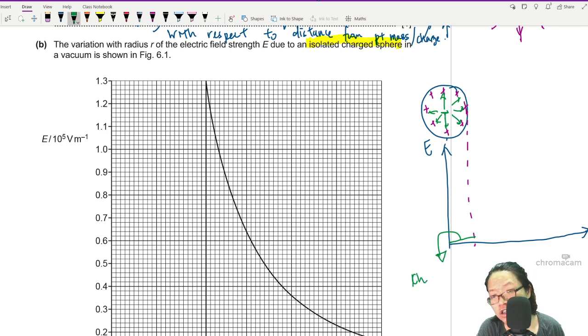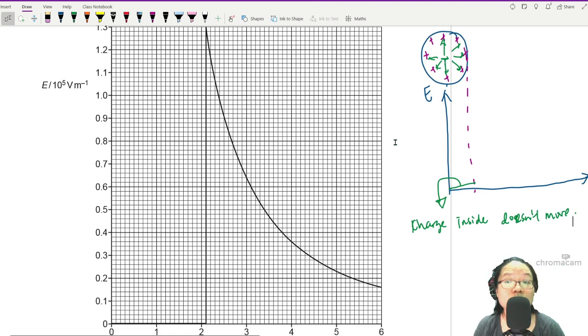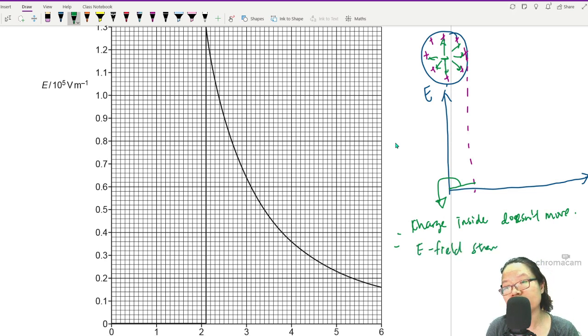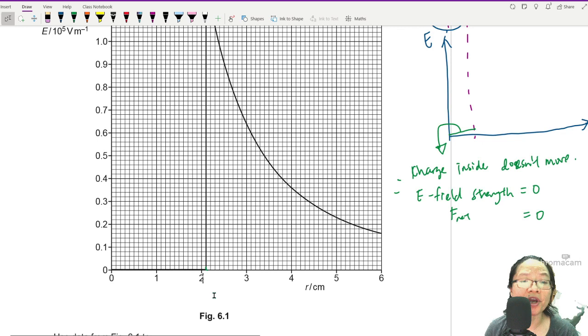That's why inside here the electric field strength E is zero. Commonly asked question also includes explaining why this is zero. The short form version will be: the charge inside of the sphere doesn't move, and because the charge inside the sphere doesn't move, this means that the electric field strength, net force is zero.